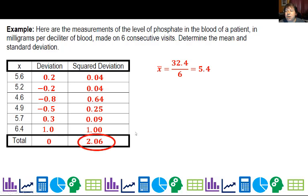Alright. So we're going to use that to calculate our variance. Our variance is going to be 2.06 over six minus one, which is 0.412.